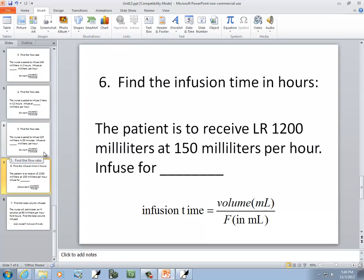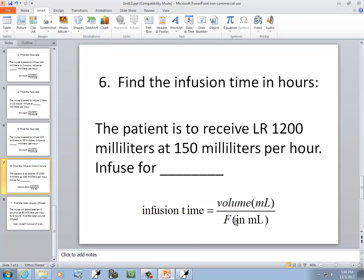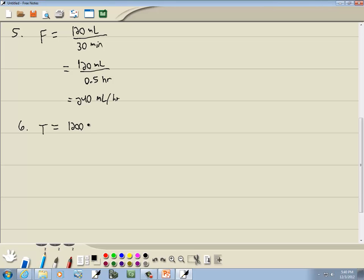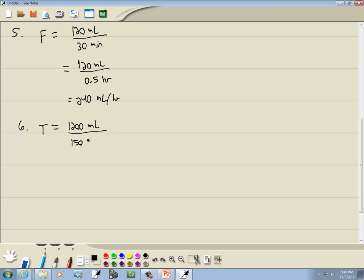The next problem is asking us to find the infusion time. Infusion time is volume in milliliters over the flow rate in milliliters per hour. Patients receive LR 1,200 milliliters, so 1,200 milliliters goes on top at 150 milliliters per hour. So 1,200 divided by 150 means that it's going to be for eight hours.